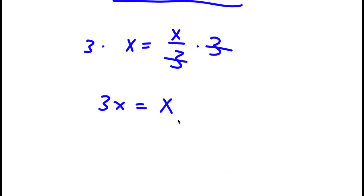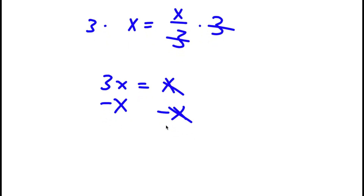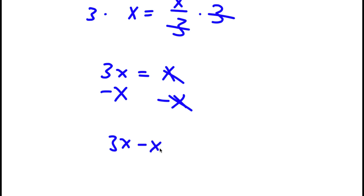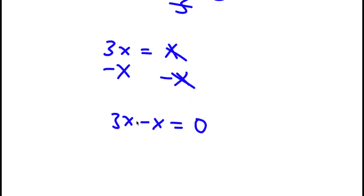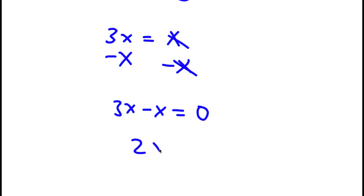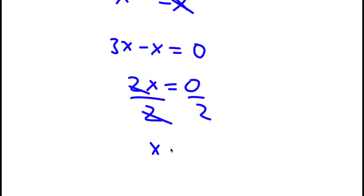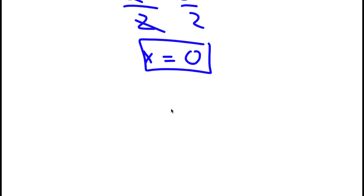Now I'm going to subtract x from both sides. So then these two cancel out, and I'll be left with 3x minus x is equal to 0. Well, 3x minus x is simply 2x, so I have 2x equals 0. And now if I divide both sides by 2, these two cancel out. I'll be left with x is equal to 0 divided by 2, which is 0. So that's the second method of solving this problem.